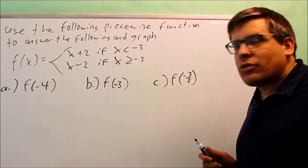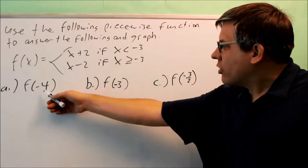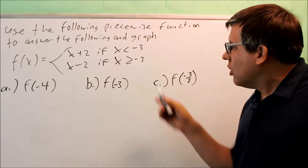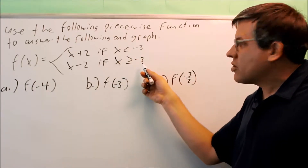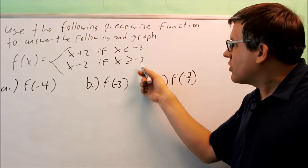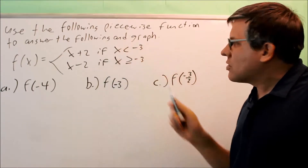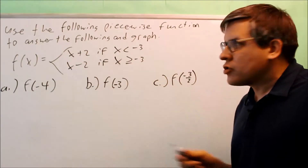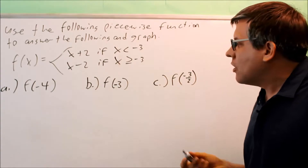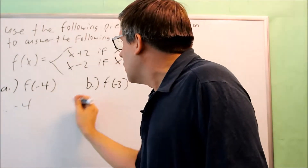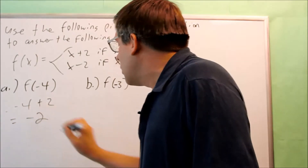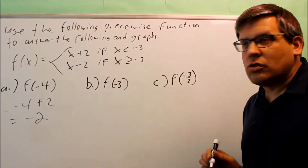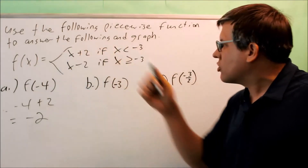When you want to evaluate these, you look at the number inside the parenthesis and see which condition it belongs to. For instance, negative 4 does not belong to the bottom expression because negative 4 is less than negative 3, so it fits the first condition. We put negative 4 into the first expression only: negative 4 plus 2 gives negative 2. So when x is negative 4, the y value is negative 2.